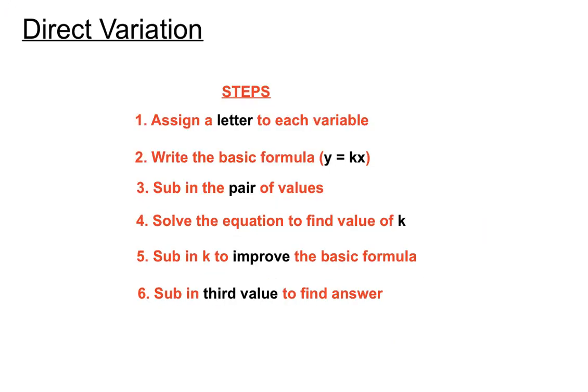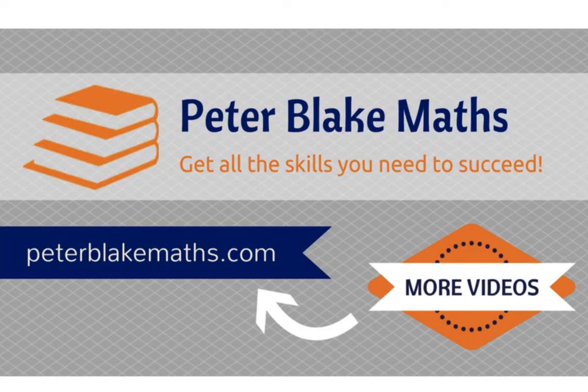These are our steps: we assign a letter to each variable, we didn't actually end up seeing that in these video examples we went through but it's often the case, we'll see it in the next one. Write the basic formula, sub in a pair of values, we did a bit of solving it wasn't a hard solution it was a one step equation there. Once we found K we improved the basic formula and that allowed us to just sub in that third value. So mathematically speaking it's not that difficult but it's tough because there's quite a process involved, there's six steps and we have to keep our wits about us and read carefully and think about it. So set your work out nice and carefully and I'm hoping you're going to have some good success on those questions. Thanks for listening PeterBlakeMaths.com We'll see you next time for inverse variation.